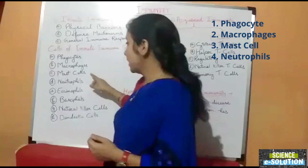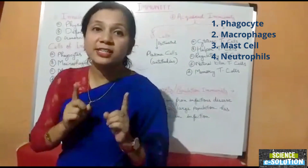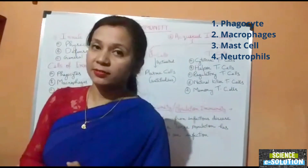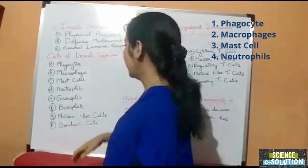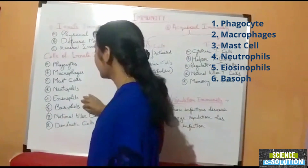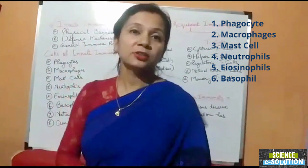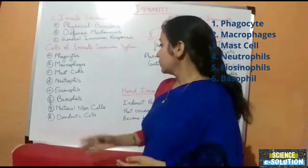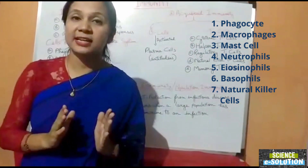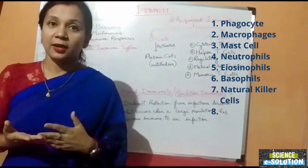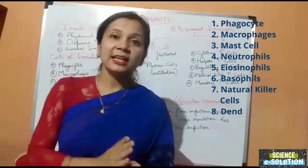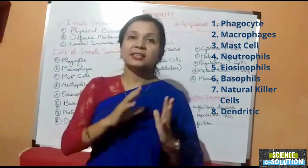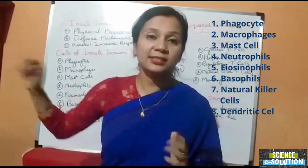The fourth are neutrophils, which are the first to reach the site of infection because they are abundant in number in our blood and are phagocytic in nature. Next are eosinophils and basophils, which both act by secreting toxic proteins against antigens to destroy them. Natural killer cells do not secrete anything; instead, they kill our body's own cells that have become cancerous or infected, so that the infection does not spread to other cells.